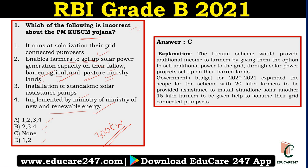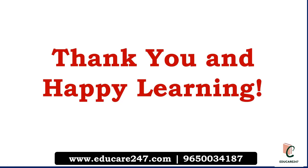So to summarize: you know the overall capacity, the implementing ministry, the eligible land types including marshy and pasture lands, the three components of the scheme, and that it is for a period of five years. These are the important aspects of PM Kusum Yojana. We will have similar lectures on various schemes in upcoming sessions. Thank you and happy learning.